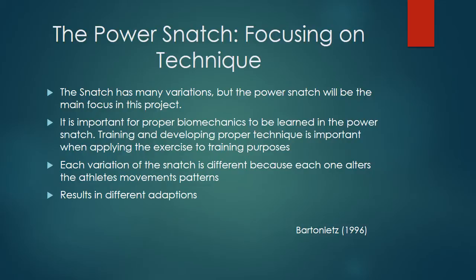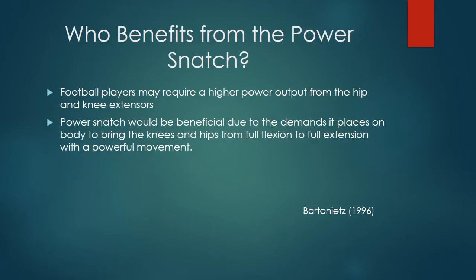Each variation of the snatch is different because each exercise alters the athlete's movement patterns and barbell velocity, resulting in different adaptations. Sports such as football may require a higher power output from the hip and knee extensors at the same time. This is where the power snatch would be beneficial, due to its demands to go from full knee extension and hip flexion up into full knee and hip extension with a bar.